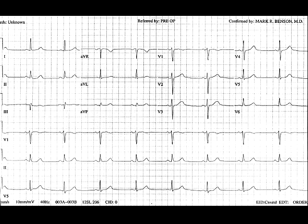Smaller Q-waves may represent septal depolarization. These are normal and are generally seen in the lateral leads — 1, aVL, V5, and V6 — because the septum normally depolarizes from left to right. Of note, an isolated Q-wave in lead 3, even if it is large, can be a normal finding. Q in 3 is free.